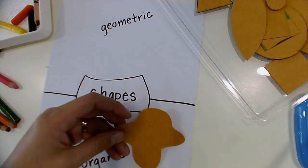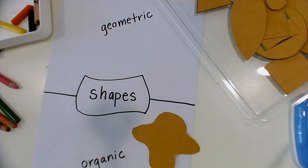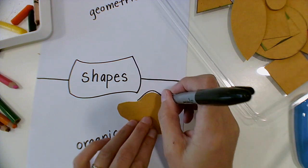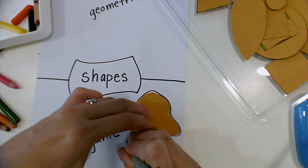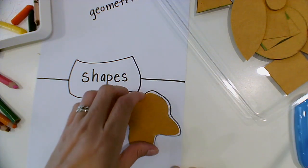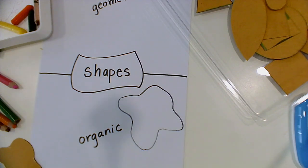Organic shapes come from nature. I see that I picked up an organic shape first, which just kind of looks like a blob or a paint splatter. So I'm going to trace that on the organic side.